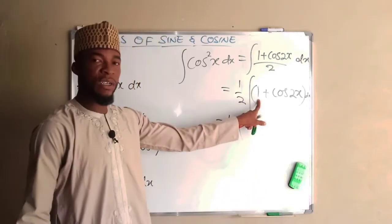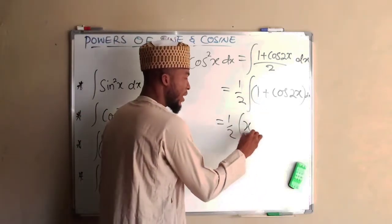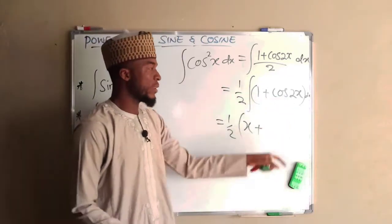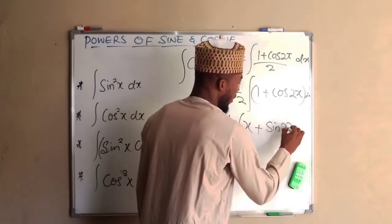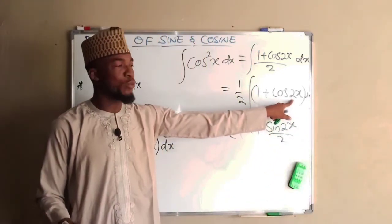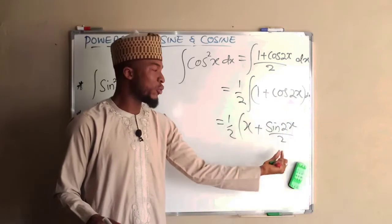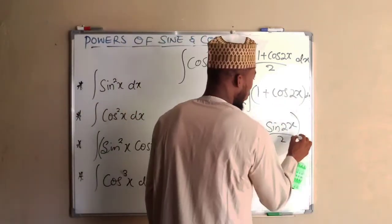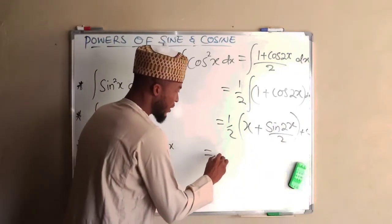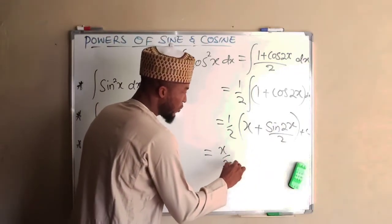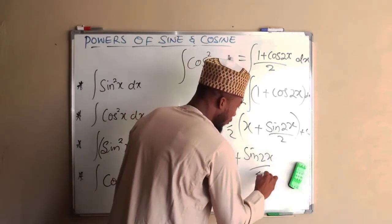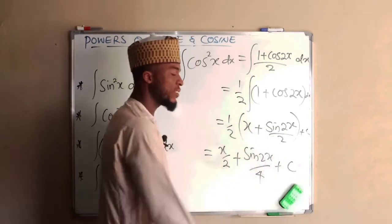This is 1 over 2 times the integral of (1 plus cos 2x) with respect to X. This equals 1 over 2 times: integrating 1 gives X, plus integrating cos 2x gives sine 2x divided by 2 — that extra 2 comes from differentiating 2x — plus the constant of integration C. Expanding gives X divided by 2 plus sine 2x divided by 4 plus C.